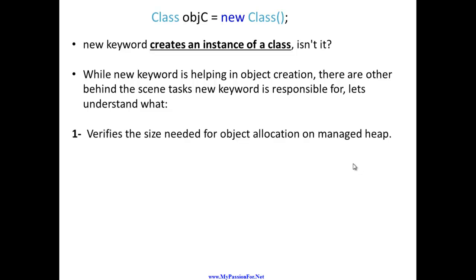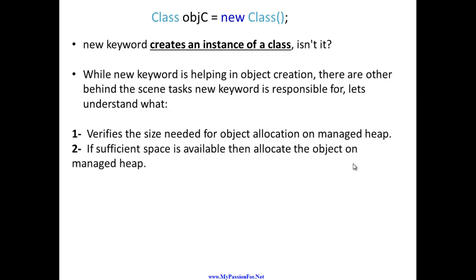An object can be instantiated or allocated on the managed heap, but first the new keyword verifies the size that the object requires to be allocated on the managed heap. That is number one. Number two, if sufficient space is available, then only will your object be allocated on the managed heap.